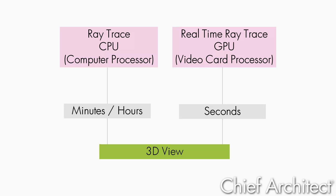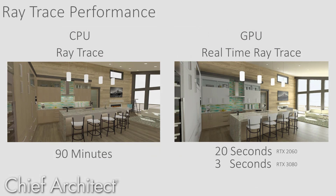Ray trace rendering can now be performed on the video card, the GPU, versus the computer's CPU. These new video card GPUs are highly optimized for 3D rendering, and Chief Architect X13 takes advantage of these GPUs. With this kitchen scene, the CPU ray trace took 90 minutes to generate, and the GPU ray trace took 20 seconds, and even faster using a higher-end video card.